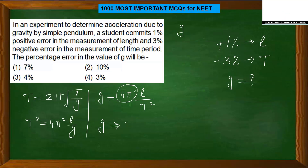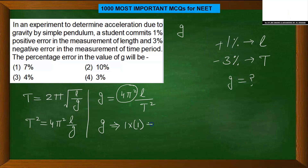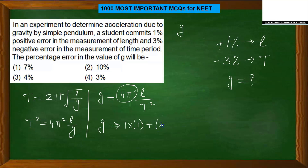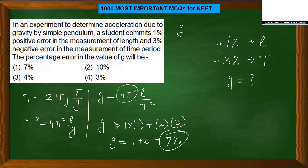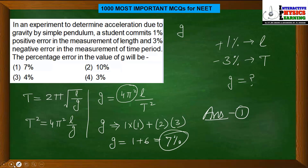The power of L is 1, so its contribution is 1 × 1% = 1%. T has power 2 in the denominator, so its contribution is 2 × 3% = 6%, taken as positive. Therefore, the percentage error in g = 1 + 6 = 7%. The answer to this question is option 1. I hope this question is clear — let's move on.